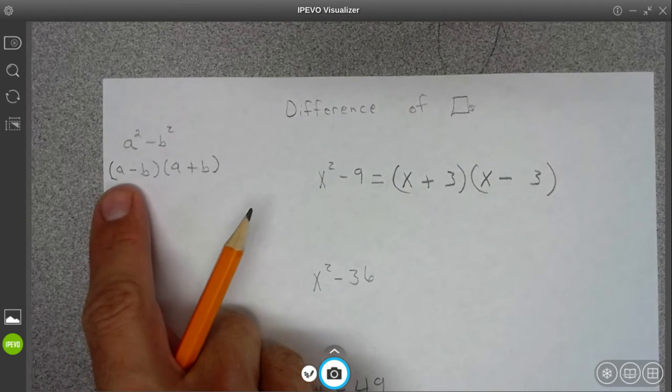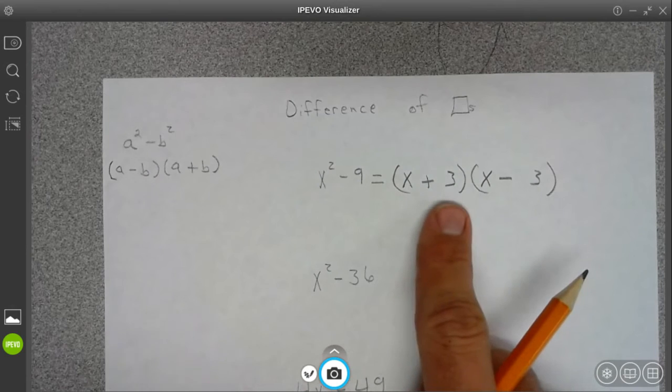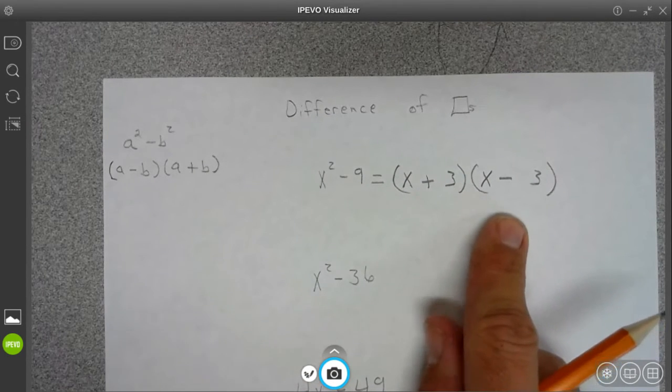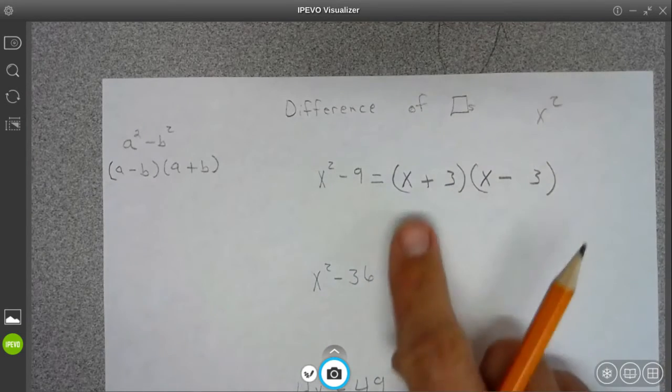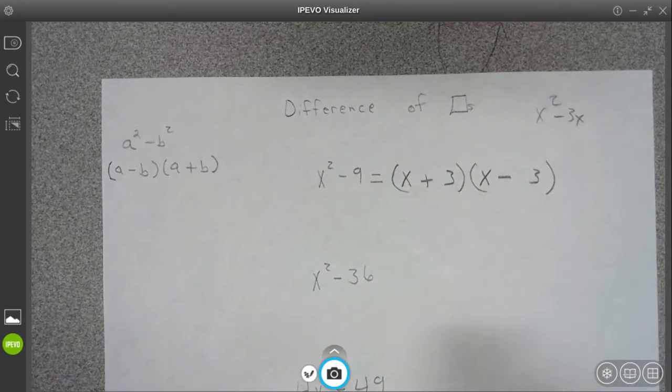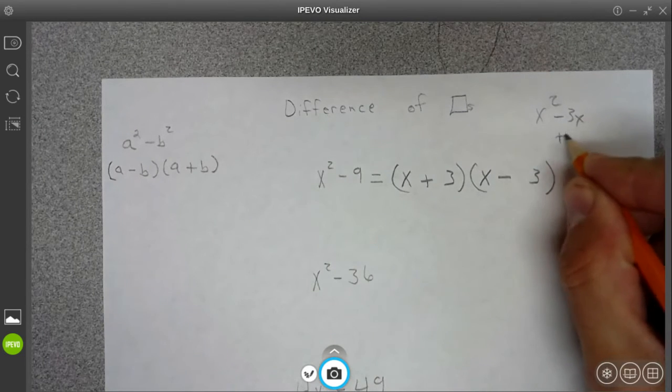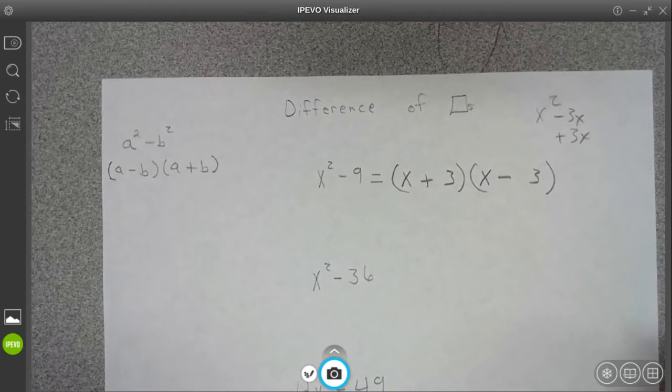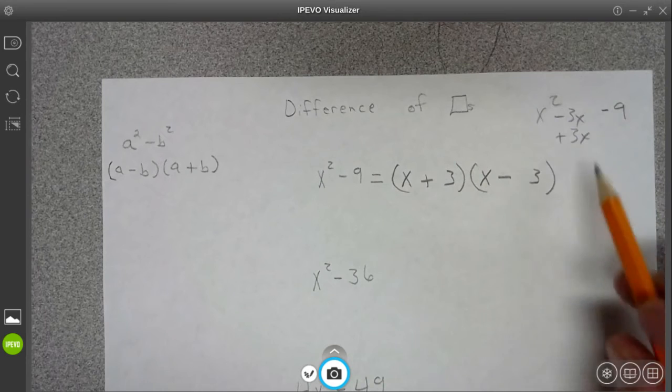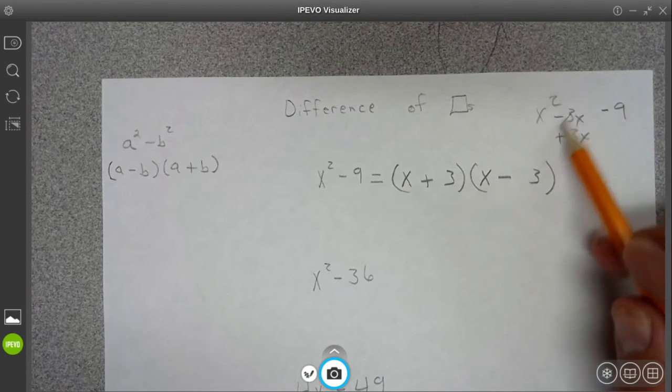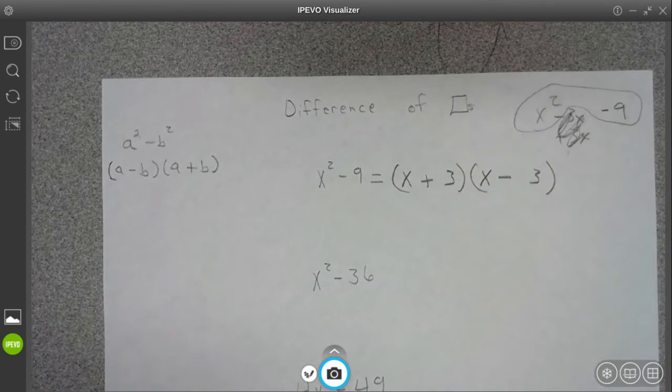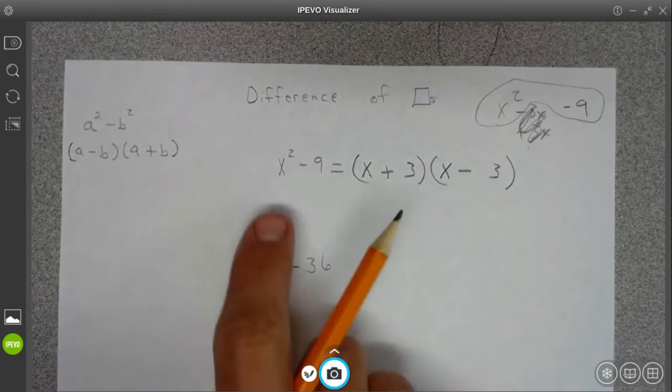And the b was like our three. If you were to multiply this out, x times x would give you x squared, x times negative 3 would give you negative 3x, and positive 3 times x would give you positive 3x. Then 3 times negative 3 would give you negative 9. But these two will just cancel with each other because one's positive, one's negative. That's why this works.